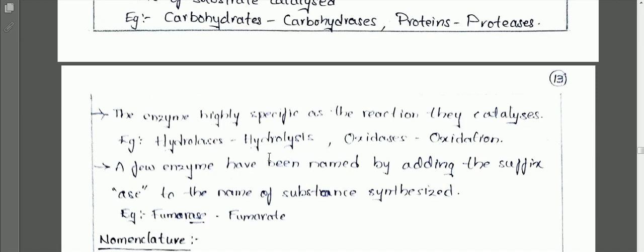Some enzymes were named by adding a suffix '-ase' to the substrate name. That means the name of the substrate on which the enzyme acts is taken, and the suffix '-ase' is added to form the enzyme name.